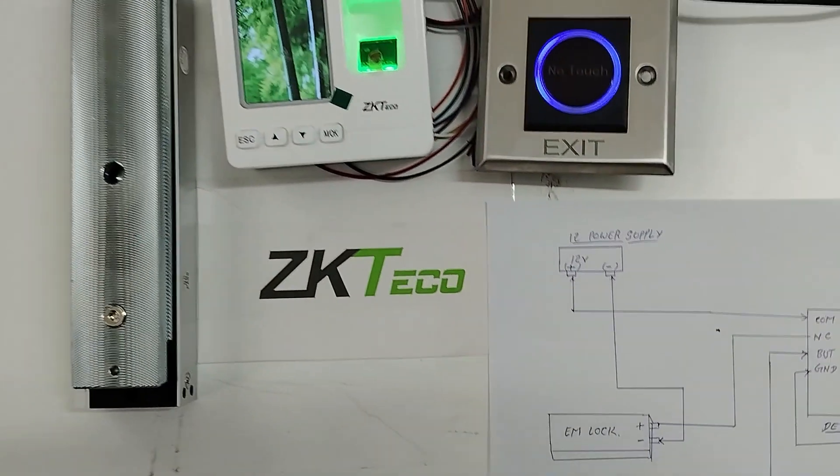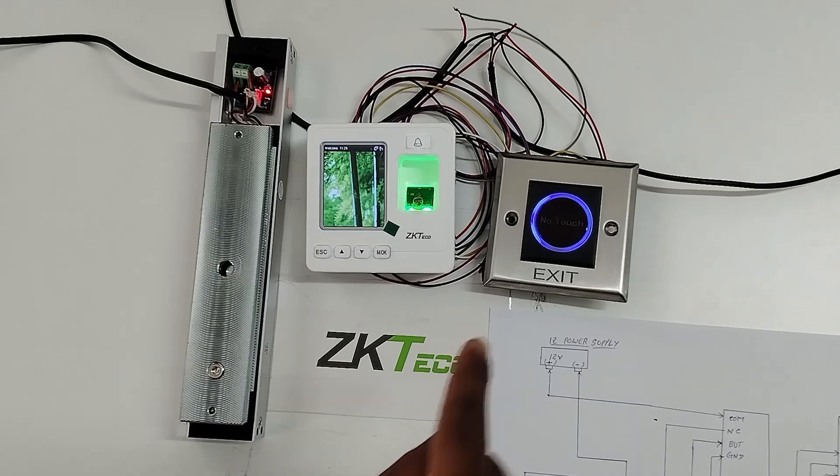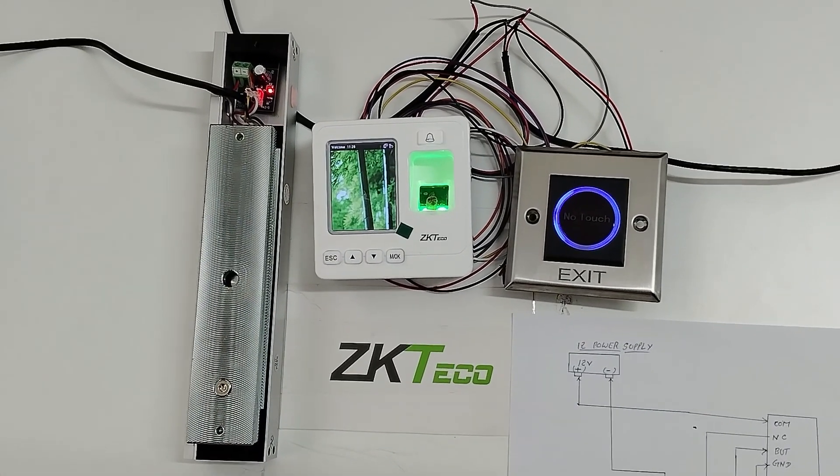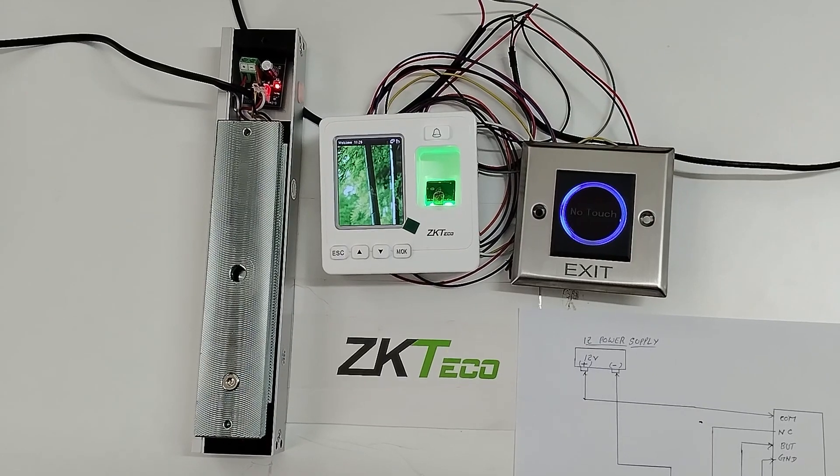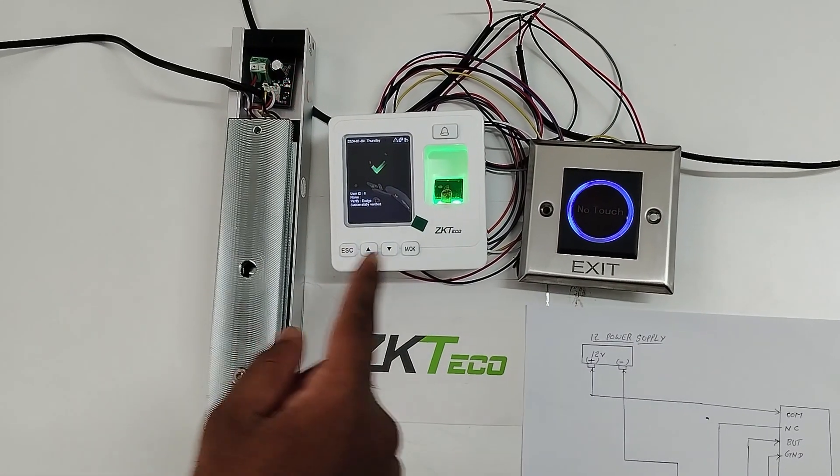I am using SF100 device for in purpose and exit button for the out purpose. I have already enrolled one user in SF100 device. Now I am doing punch through card. Verification successful.